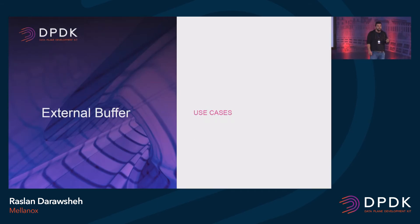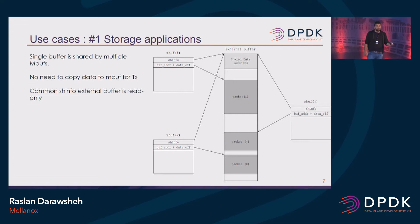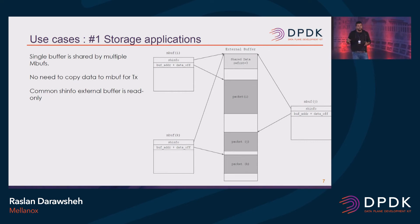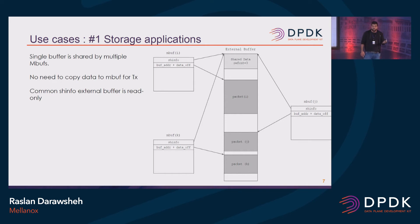I'll go over the use cases I have here — actually two use cases. I'll start with the storage application. We can have one single shared buffer — it's a huge one, already loaded on the system. You can see we have several Mbufs all pointing to chunks of memory, where each chunk represents single data for a packet. This way, we will not need to copy the whole data from the memory to the Mbuf itself. All you really need to do is just point to this data and send the packet. The shared info is read-only since the reference count is more than one.